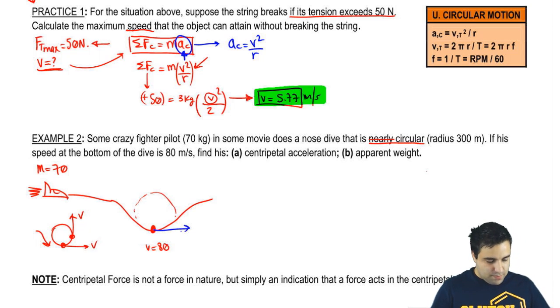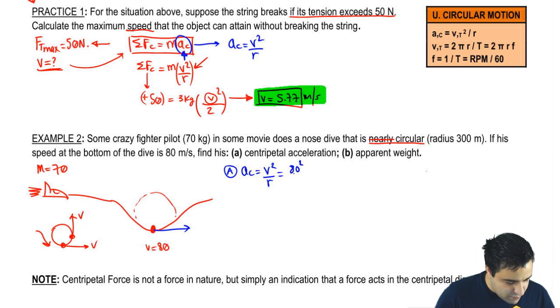That's the velocity at the bottom, and I want to know what is his centripetal acceleration. Let's find that real quick. AC is just, I'm in a circle, so I'm just going to use v squared over r, and I actually have these numbers. So it's 80 squared over 300, and 80 squared over 300 gives me 21.3 meters per second squared.